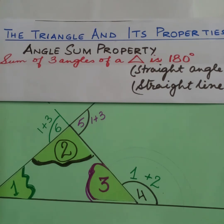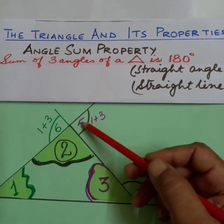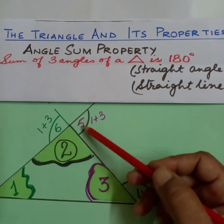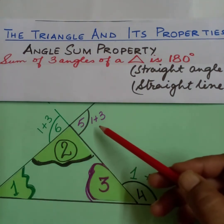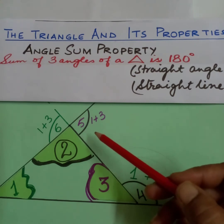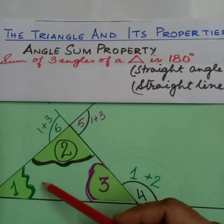This line extends to form angle 5. We have proof that this angle 5 is equal to angle 1 plus angle 3. That means the external angle is equal to the sum of the two opposite angles.